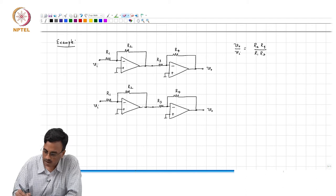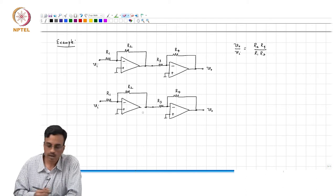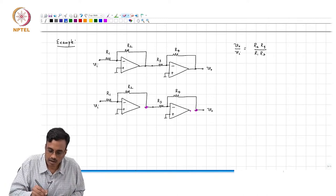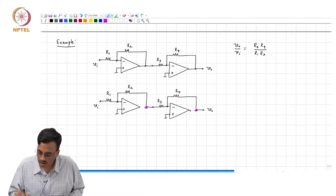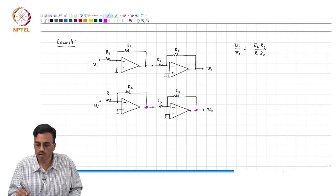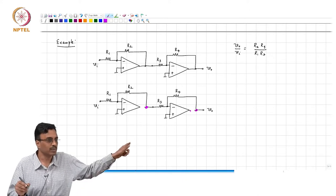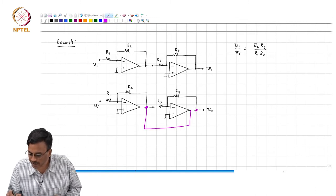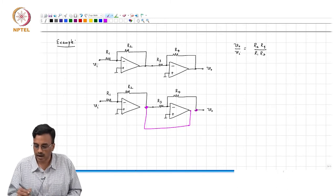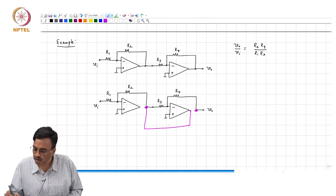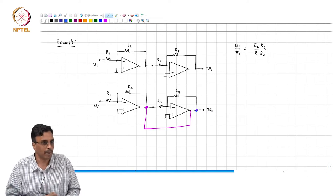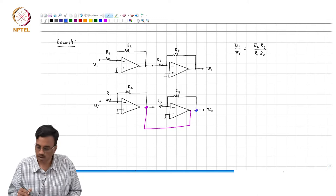You can cut this off here, you can cut this off there. Earlier this node was connected to and being driven by the output of the first op amp. Now, all I am going to do is drive it with the output of the second op amp. And this node, which was earlier being driven by the output of the second op amp, I am going to drive it with the first op amp.